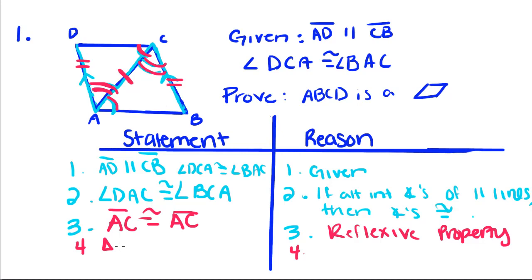So, next we can say triangle DAC is congruent to triangle BCA. And that's by angle, side, angle.